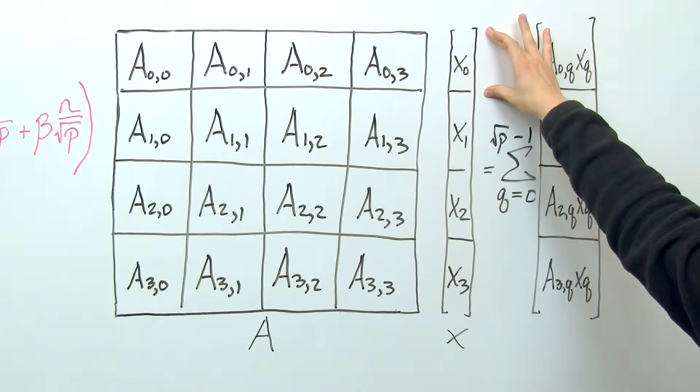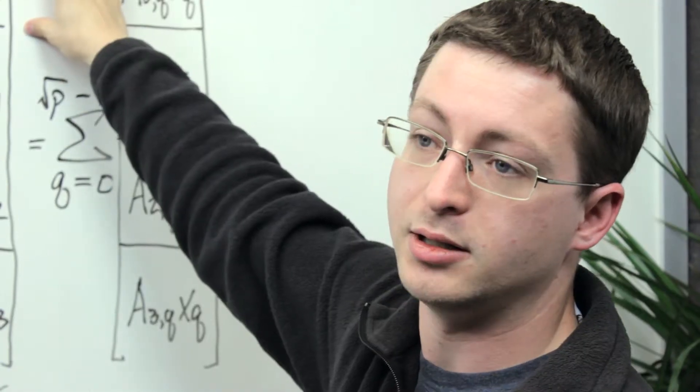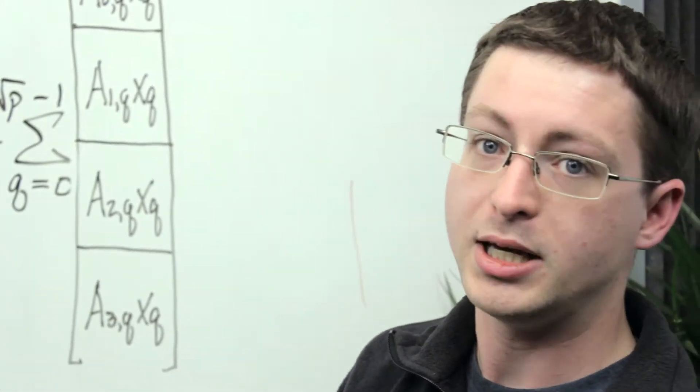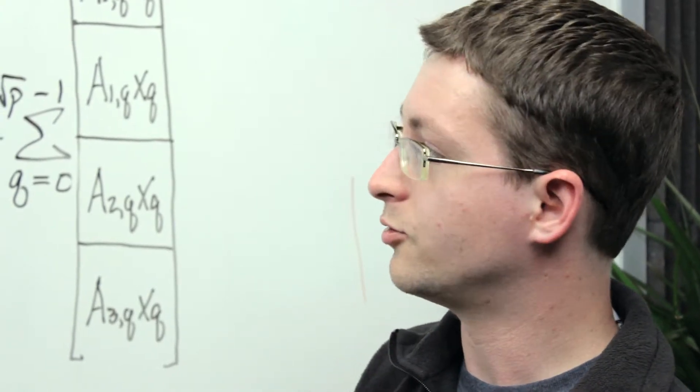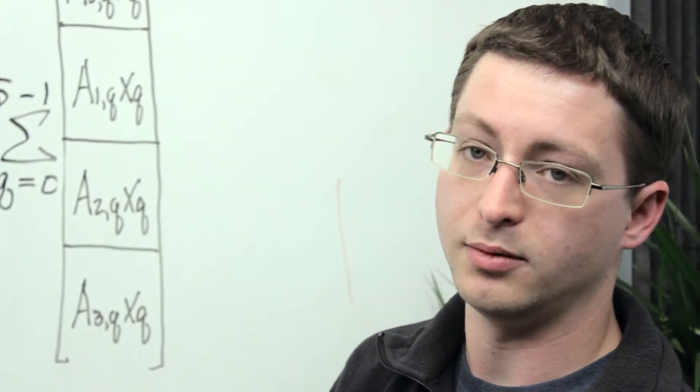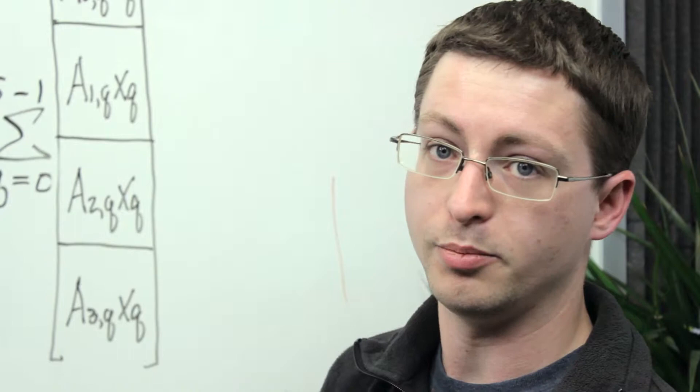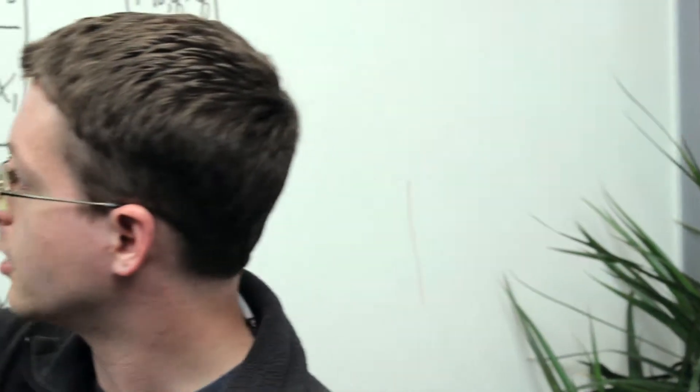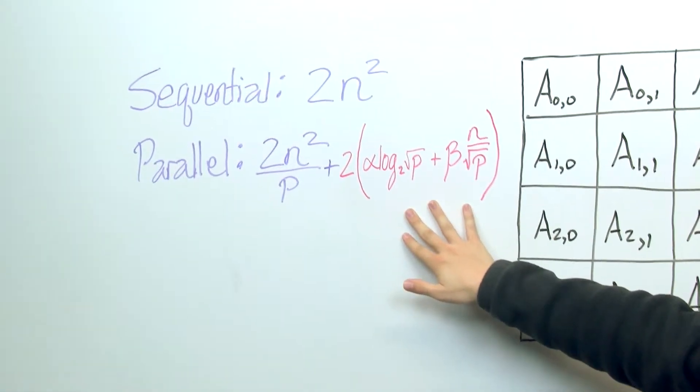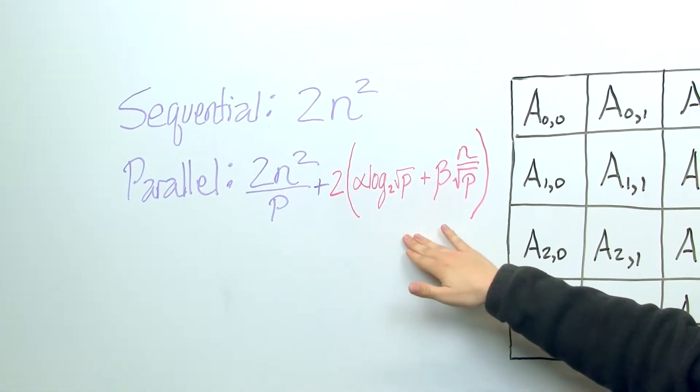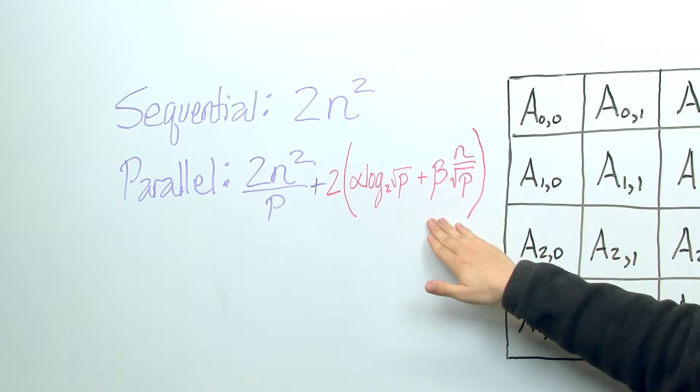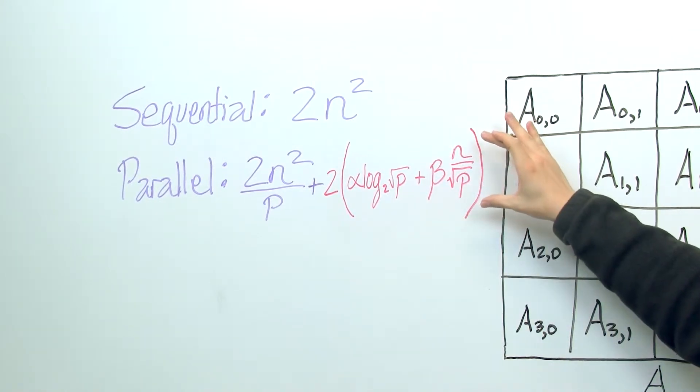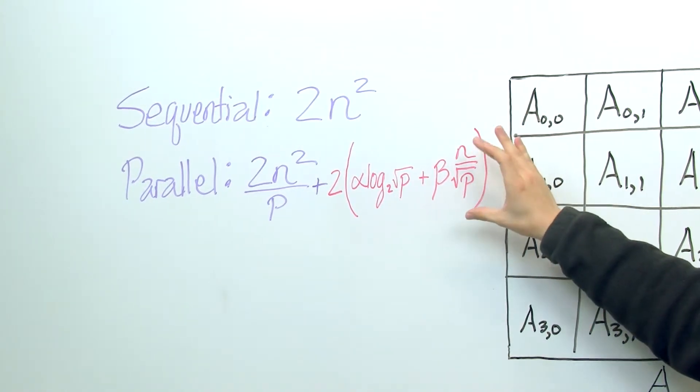So in particular, the length of this portion of the result will be of size n over square root of p in the general case. And so if we perform a reduce-scatter on a vector of length n over root p processes, then we know that the cost is going to be what's in parentheses here. In particular, it's going to be alpha times log 2 root p plus beta times the length of the subvector, which in this case is n over root p.